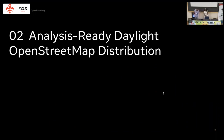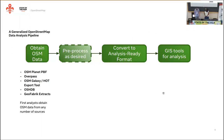The Analysis Ready Daylight OpenStreetMap distribution is what I'd like to talk to you about today. This is a version of Daylight that we take and do some extra processing to, to hopefully make it easier for researchers and data analysts looking to work with OpenStreetMap data.